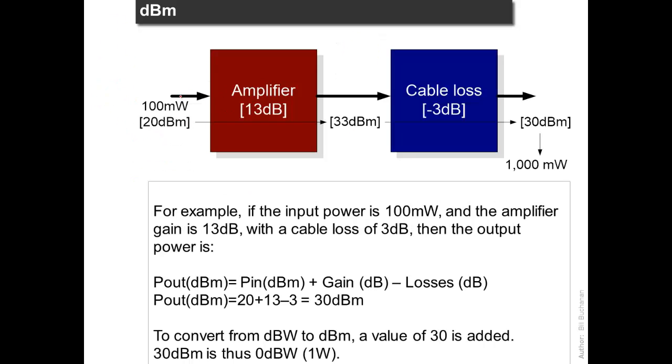Okay so this shows an example of an amplifier here. Here we have 100 milliwatts which is actually 20 dBm. 100 is 2 times 10 is 20. Here we have a 13 dB amplifier. So we increase by 13. We then have a 3 dB loss. So we reduce by that. So then we end up with 30 dBm. That's 30 dB above this 1 milliwatt. And in terms of power that gives us 1,000 milliwatts.